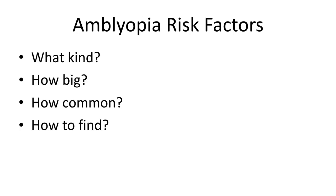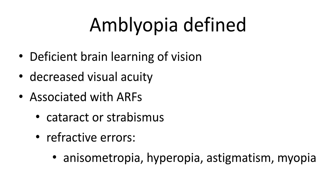So what about amblyopia risk factors? What kind are there, how big are they, how common are they, and how do you find them? Amblyopia is a deficient brain learning of vision. It is associated with decreased visual acuity and always associated with amblyopia risk factors: cataract or strabismus as anatomic risk factors, and the refractive errors anisometropia, hyperopia, astigmatism, and high myopia.